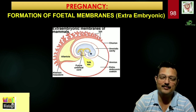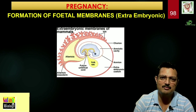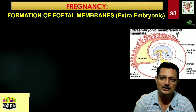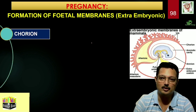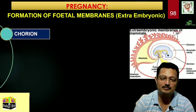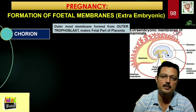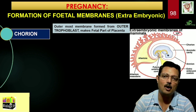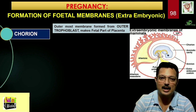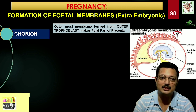Now let's look at the formation of extra-embryonic membranes — there are four. First is the chorion — the outermost membrane, formed from outer trophoblast cells. It makes the fetal part of the placenta and plays an important role in placenta formation.